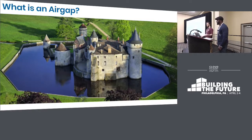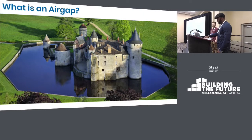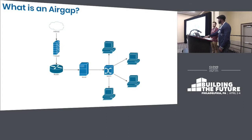So what is an air gap? It is the 21st century moat. If you're in an air gapped network, you're in that castle — nobody can get in, nobody can get out. No bridges in an air gapped environment. Can't get in, can't get out to the internet. A more boring diagram shows the internet at the top, and when you air gap the environment — boom — no internet.